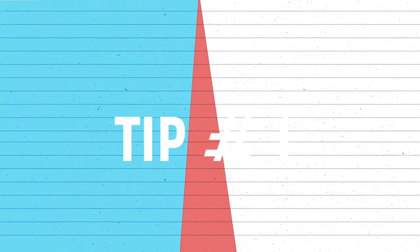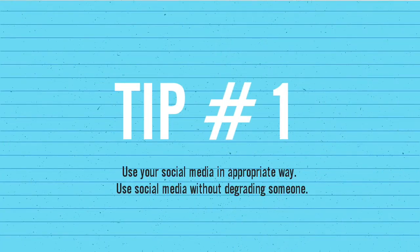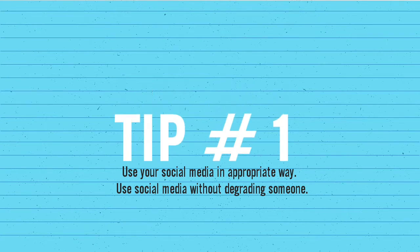In order to be a media literate person, I've heard some tips on how to be one. Tip number one: use social media in an appropriate way without degrading someone. A media literate person thinks before posting, and uses social media in a wise and appropriate way.